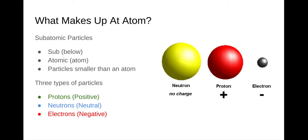From the picture that you can see, you can get a relative view of their size. Neutrons and protons are about the same size, and electrons are a little bit smaller.